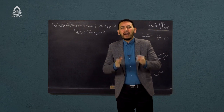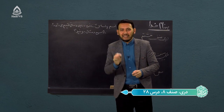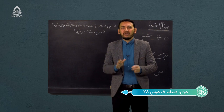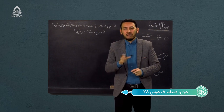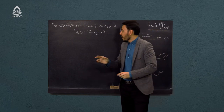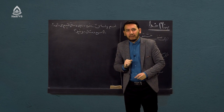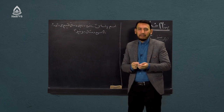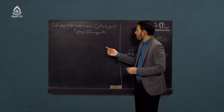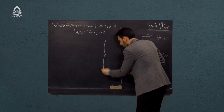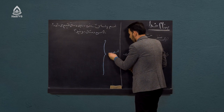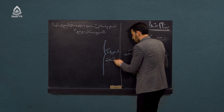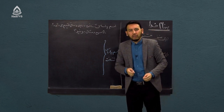تقسیم‌بندی اسم به بخش‌ها و دسته‌های مختلف بود. یکی از تقسیم‌بندی‌های اسم، تقسیم اسم بر مبنای شناخت است. در جلسه قبل ما اسم را بر اساس شناخت دسته‌بندی و تقسیم کردیم. برای یادآوری این مطلب، دوباره این درس را با هم تکرار می‌کنیم. اسم بر اساس شناخت به طور کلی دو دسته تقسیم می‌شد.